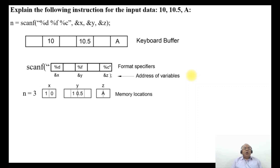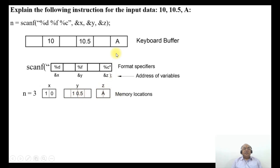In terms of memory allocation: x = 10 will occupy 2 bytes as an integer; 10.5 as a floating point number will occupy 4 bytes; and z, the character 'a', will occupy 1 byte in its memory location.